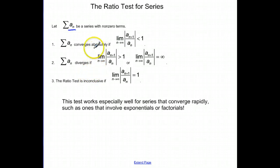The series converges absolutely if the limit of the ratio of the a sub n plus 1 over a sub n as n approaches infinity is less than 1, and it's the absolute value of that ratio.